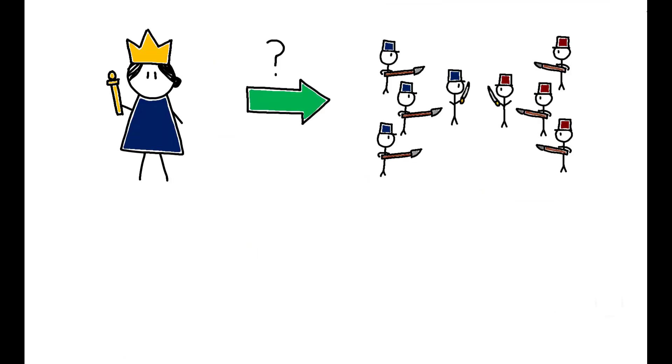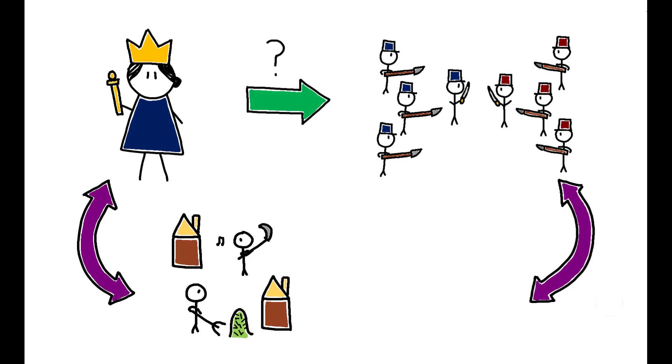Now, the key obstacle in studying the link between queens and the prevalence of conflict is that both are likely to be correlated with other factors. For example, it's possible that polities were more likely to accept a female monarch in periods of relative peace. In this case, even if the reigns of female rulers tended to coincide with reduced conflict, this would not reflect that given the same circumstances, queens were less prone to conflict than kings.